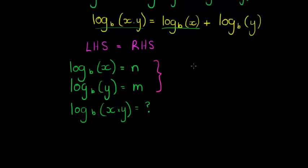In other words, we have that b to the power of n would give me x. That's what we said. And b to the power of m would give me y.